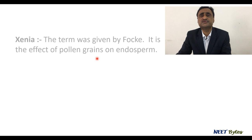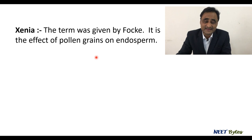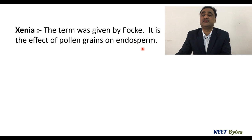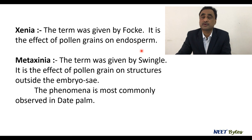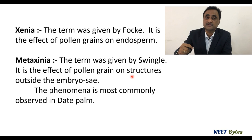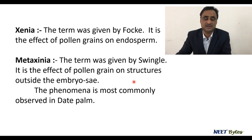Now let's learn some terms. When we observe a genetical effect of pollen grains on the endosperm, we call it xenia. There is another term called metaxenia. Metaxenia refers to when the effect of pollen grains on structures outside the embryo sac is observed — perhaps on the ovary. So xenia is the effect on the endosperm, while metaxenia is the effect on tissues outside the embryo sac.